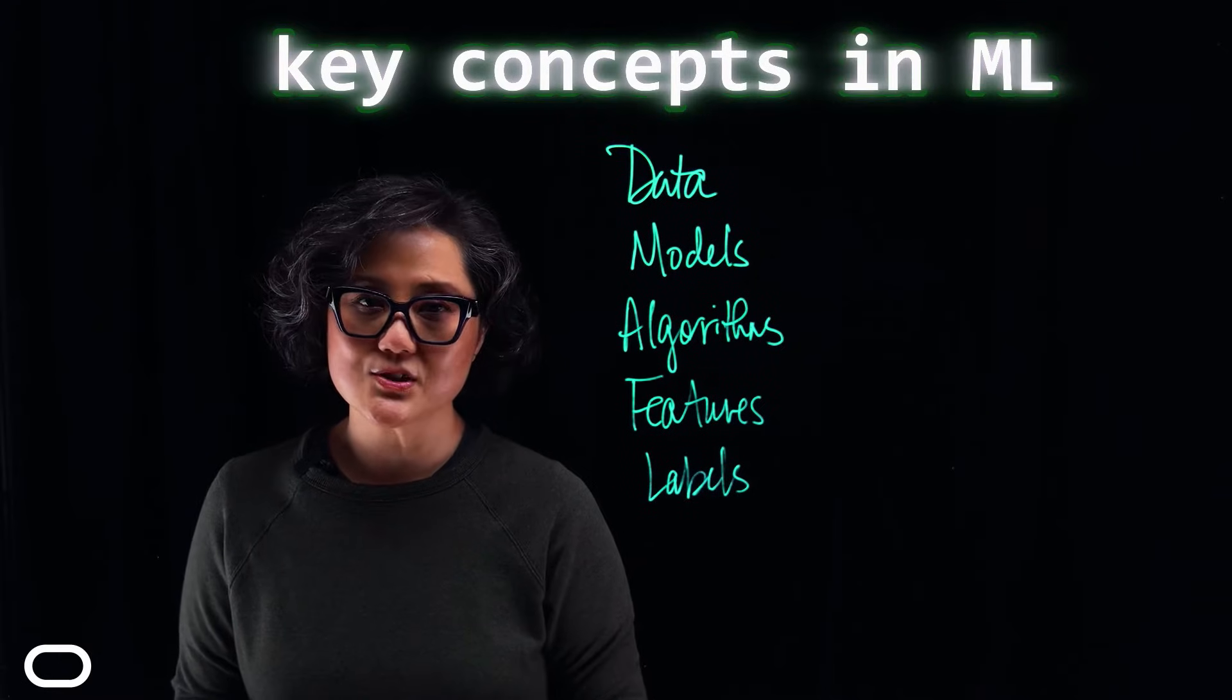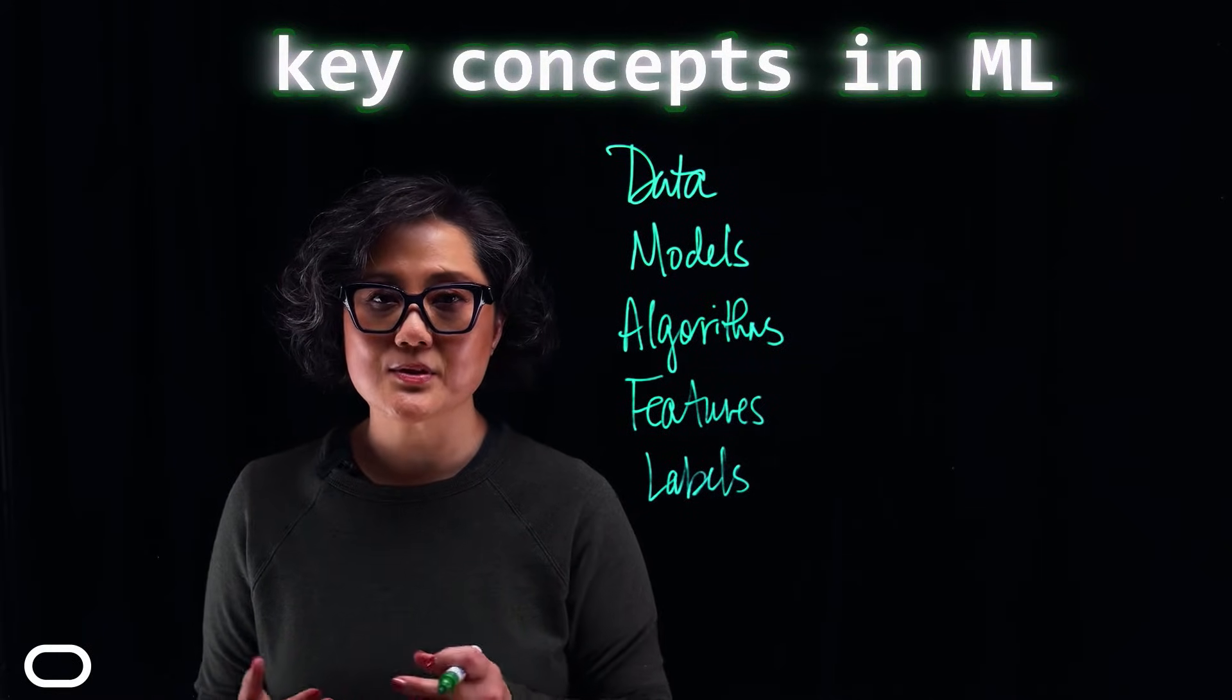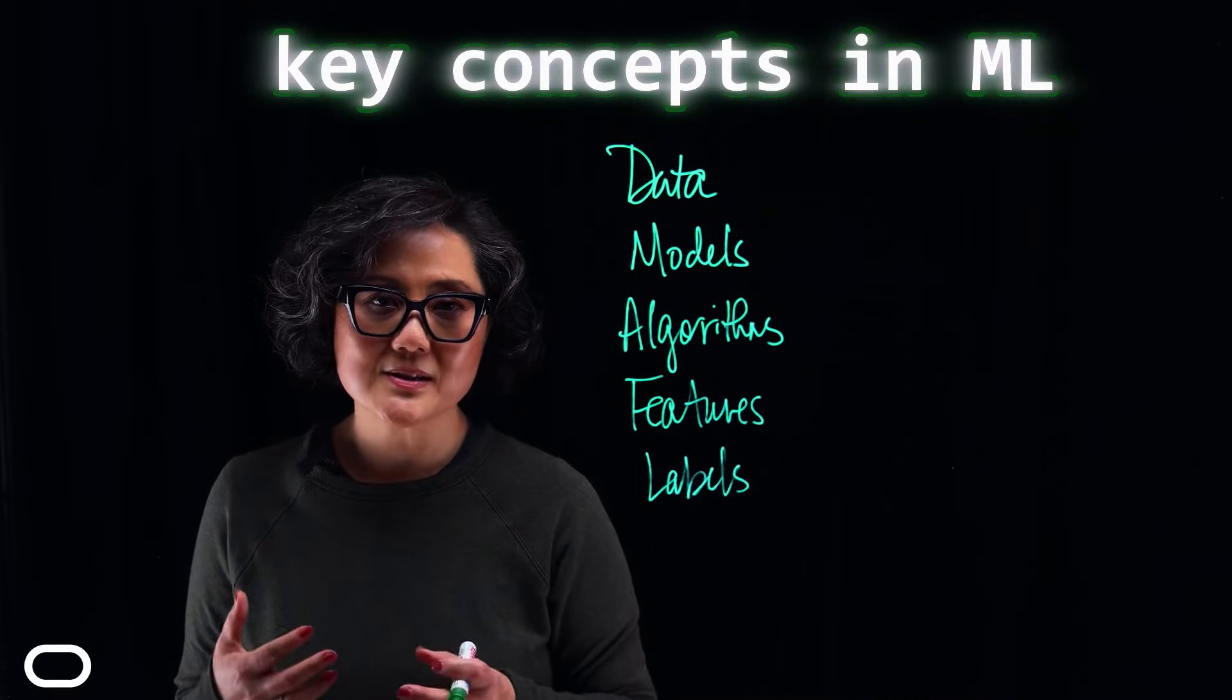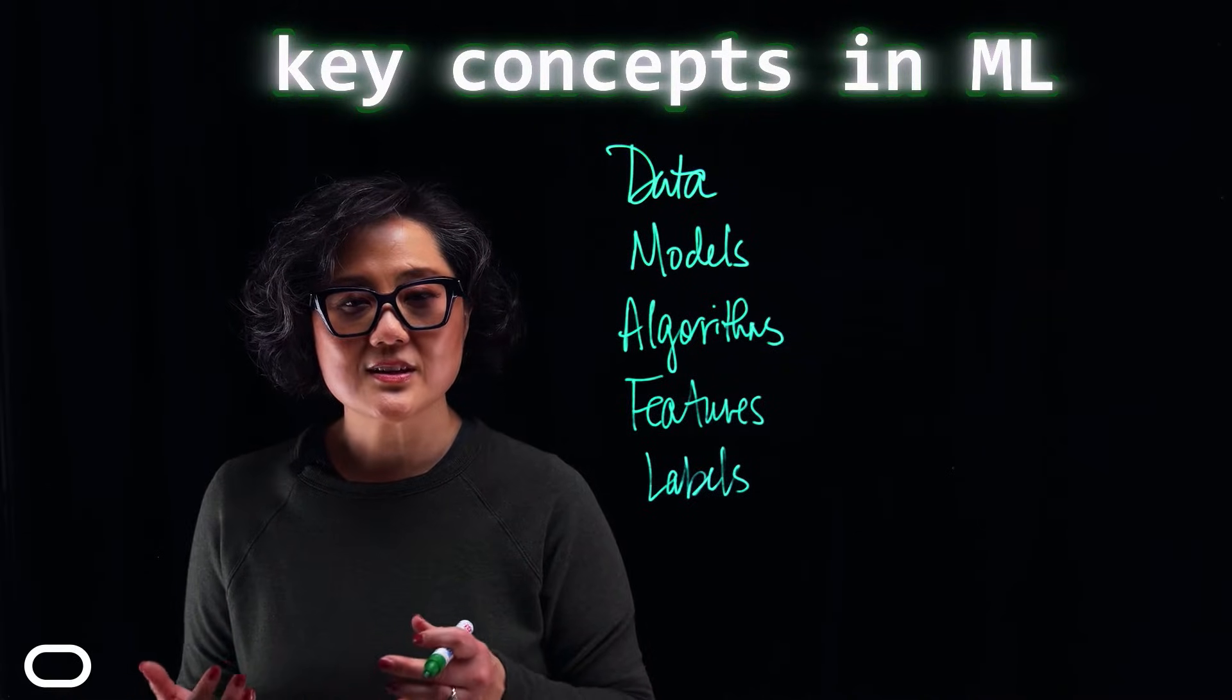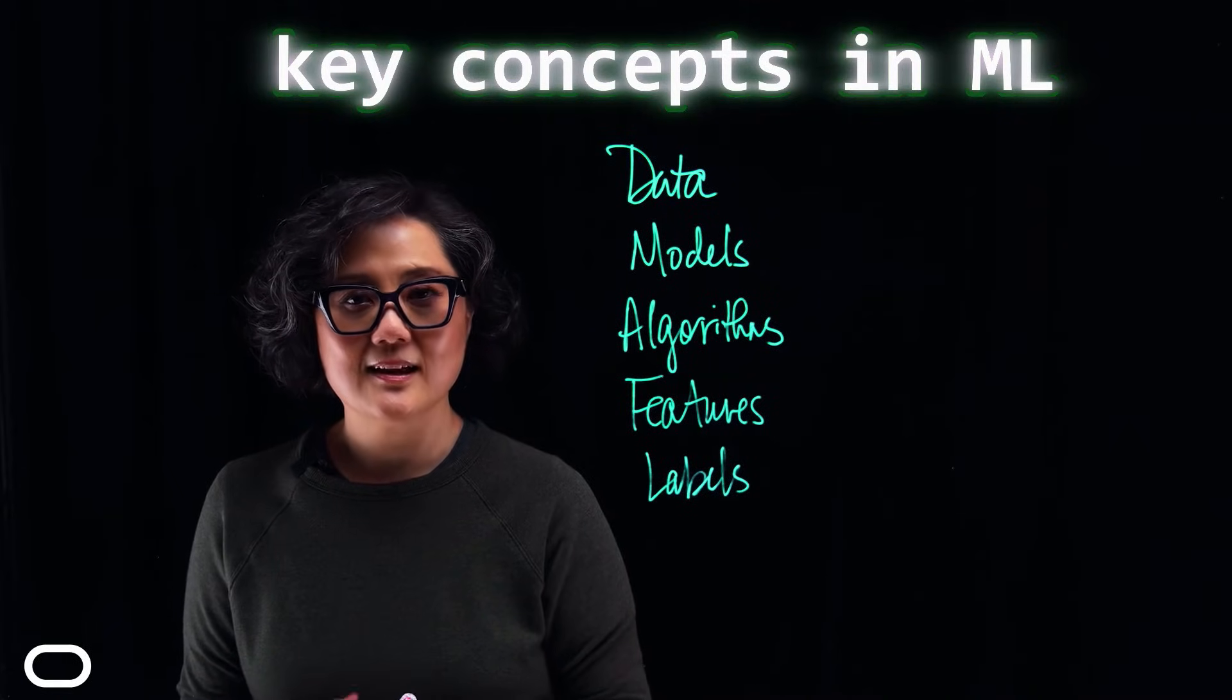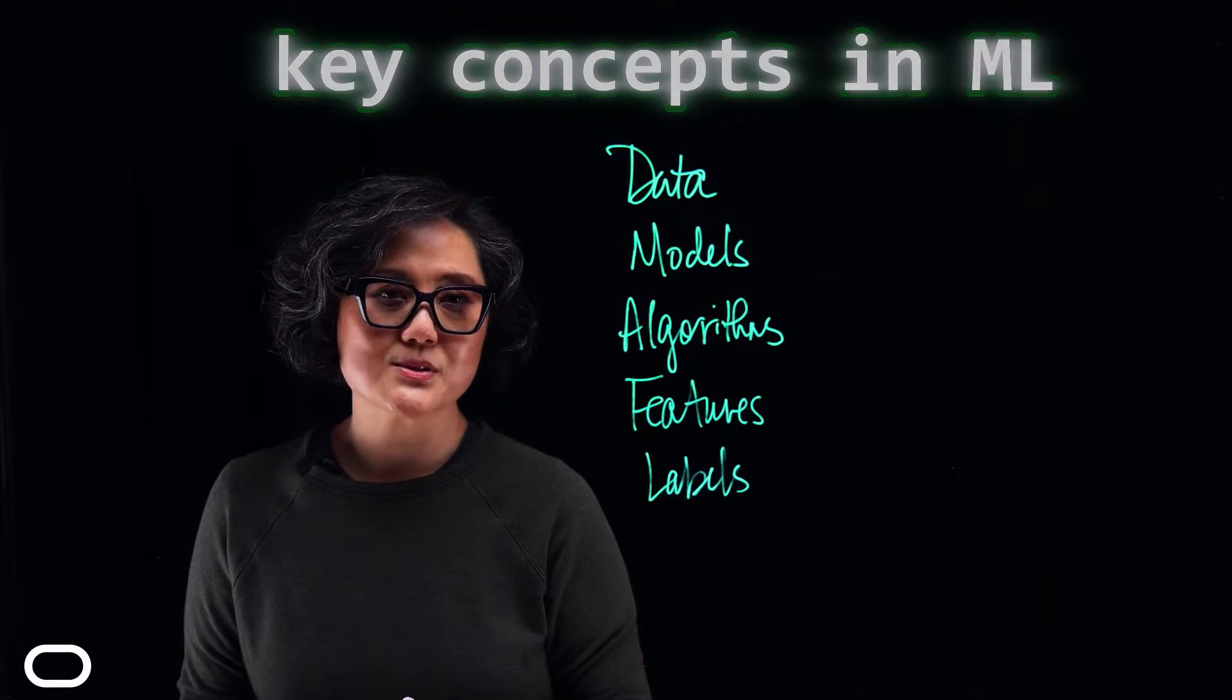Training is the process of teaching the model to understand the data by adjusting its parameters to minimize errors. Algorithms are the step-by-step procedures that the model follows to learn from the data. Features are the individual measurable properties of the data, and labels are the outcomes or targets that the model aims to predict.